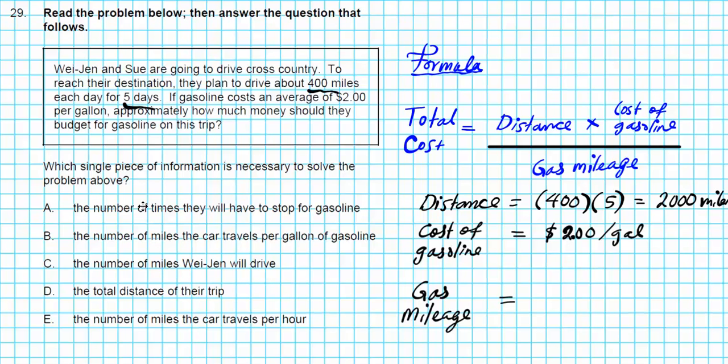If you look at the options, number of times they will have to stop, that doesn't affect the cost. The number of miles per gallon of gasoline, exactly what we're looking for. Remember gas mileage is also known as MPG, miles per gallon. So the number of miles per gallon of gasoline that your car consumes is critical in determining how much money you need to budget for the trip. If you have a high MPG, then you'll spend less money because you consume less gas. If the MPG is really low, then that means you're going to use more gas and you'll budget more money. Answer for 29 is option letter B.